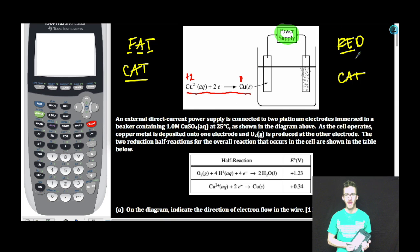So also remember red cat, reduction occurs at the cathode. So if this is my cathode and this is my anode, and electrons flow from the anode to the cathode, my flow of electrons will happen in this direction in this electrolytic cell. One point!